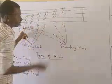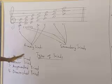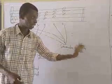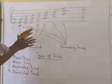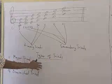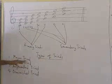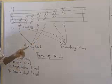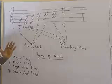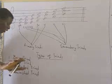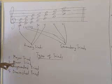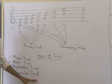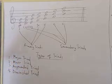Now we have the types of triads. We've discussed the divisions — primary and secondary. Under both primary and secondary, we now have their types. We have major triad, minor triad, augmented triad, and diminished triad. Under primary triads you can also have minor triad depending on what you are constructing. Just know that we have major, minor, augmented, and diminished triads. Thank you.